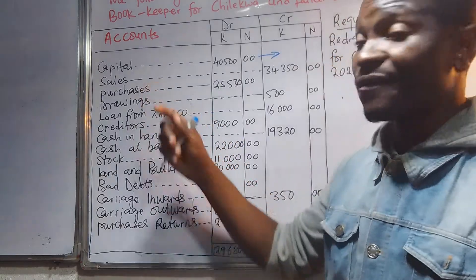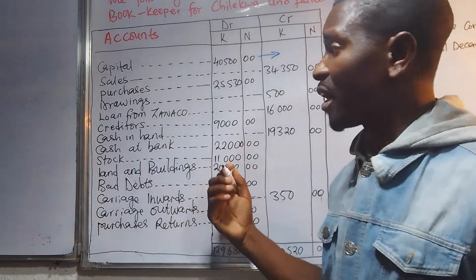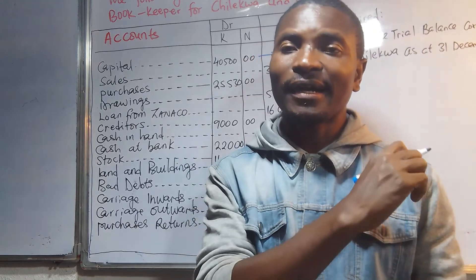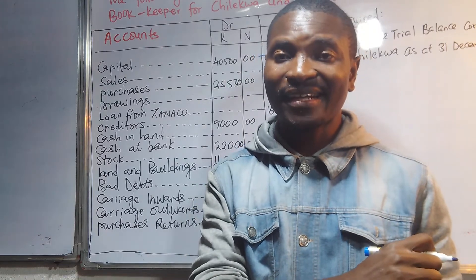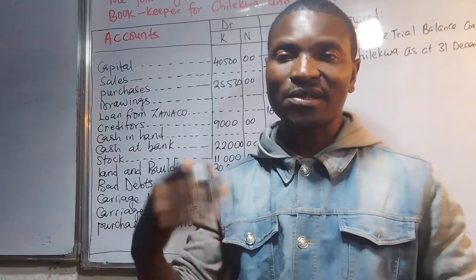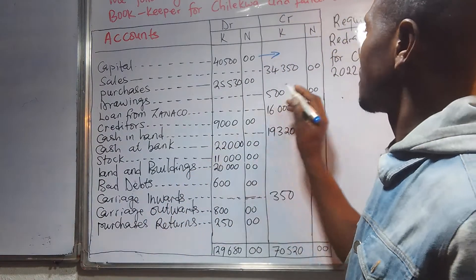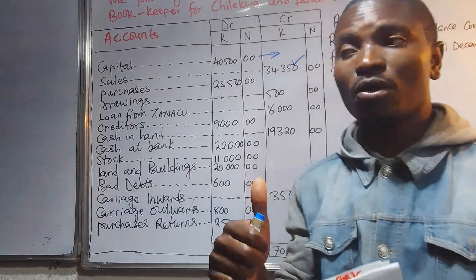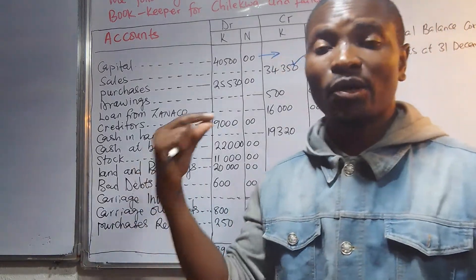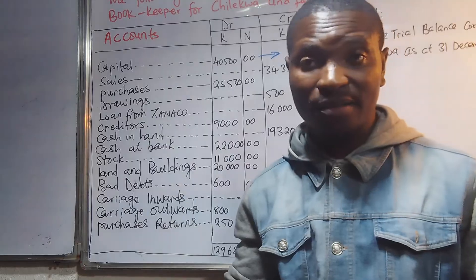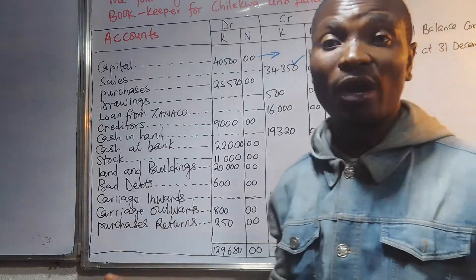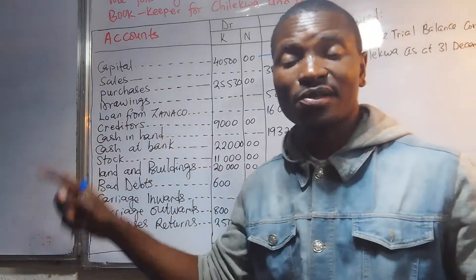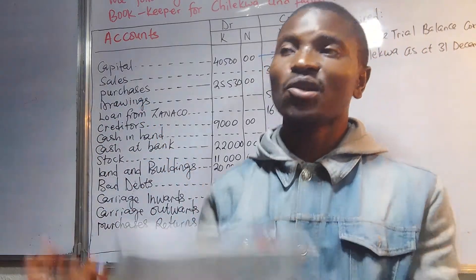Sales should go to the credit side because we are giving out goods — we are selling. The sales entry was correctly placed in the trial balance, so there is nothing to change there.